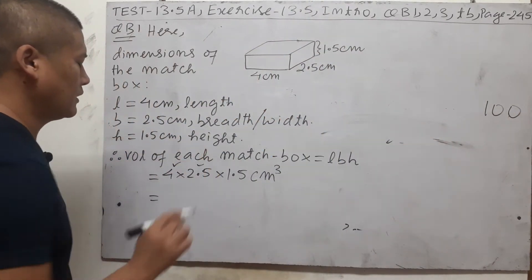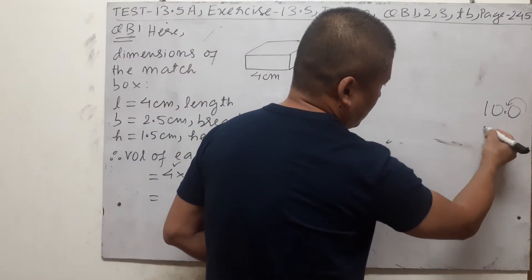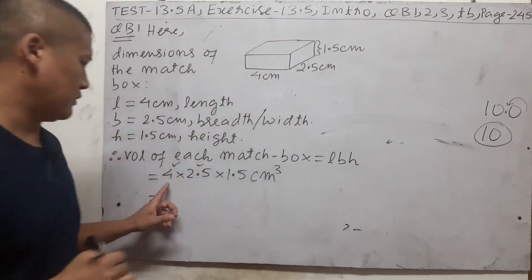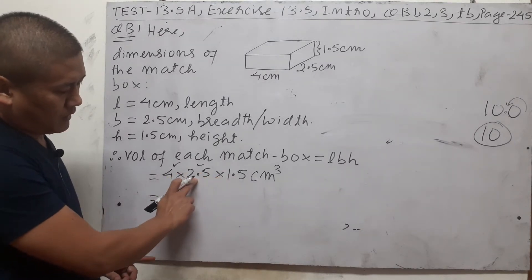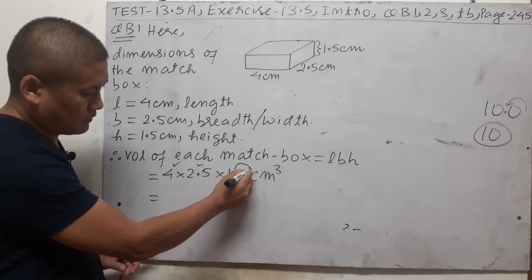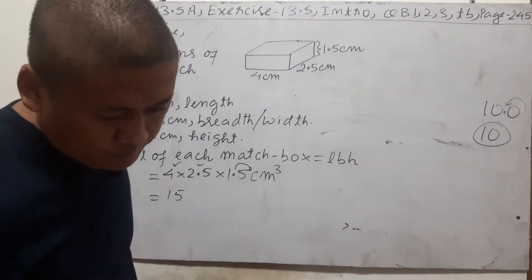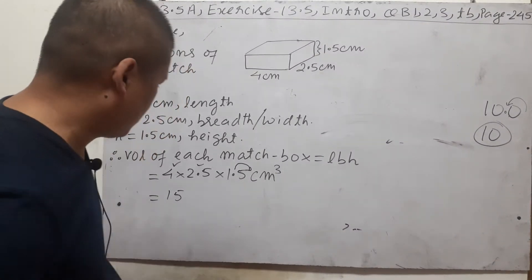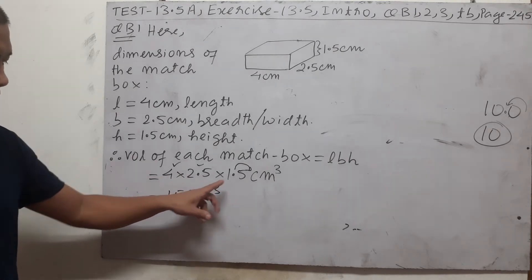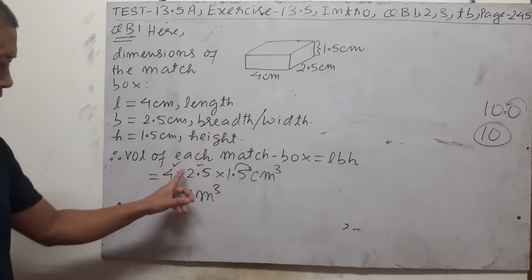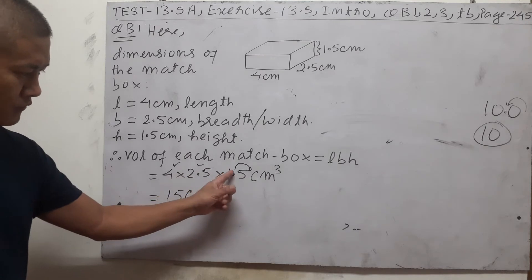So 4 × 2.5 = 10. Then multiply 10 × 1.5: think of 15, and moving the decimal gives 15. So volume of each matchbox = 15 cm³. You can do this without going to rough work at all — 25 × 4 = 100, one decimal place means 10.0, so the result is 10, and 10 × 1.5 = 15 cm³.